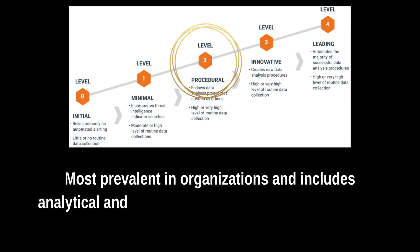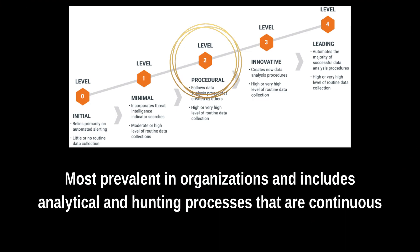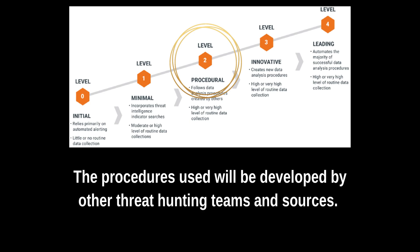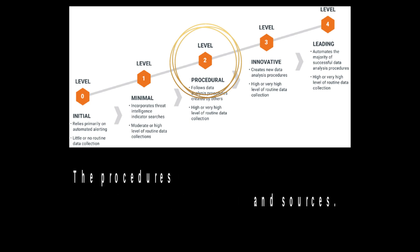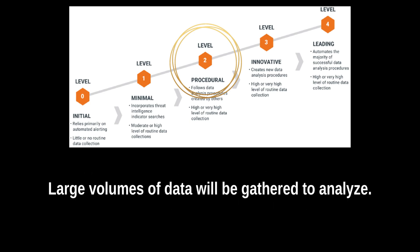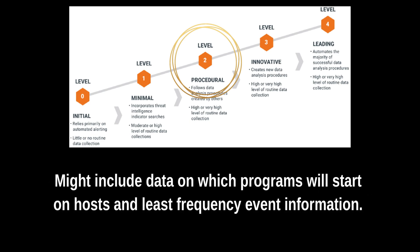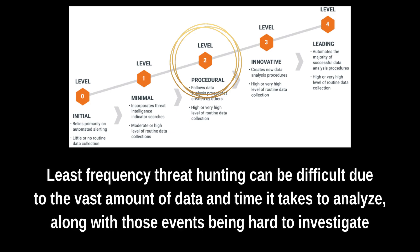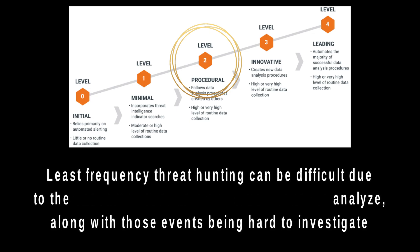Level two is procedural, and this is considered to be the most prevalent in organizations. It includes both analytical and hunting processes that are continuous. The custom procedures aren't yet developed, so they'll use those developed by others. They gather sometimes extremely large volumes of data from across the company. This data includes things like gathering data on which programs are supposed to automatically start on hosts, and least frequency analysis requiring data from many hosts. Least frequency threat hunting can be challenging due to the vast amount of data and the time it takes to analyze, along with how infrequent events are difficult to investigate.